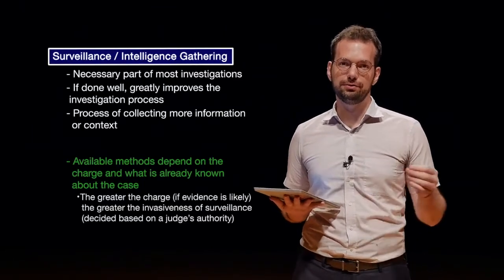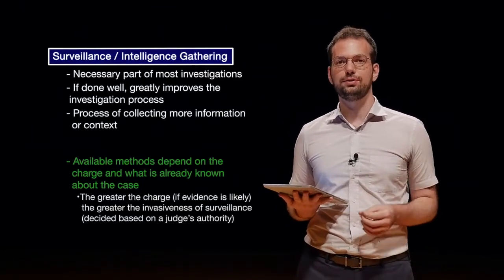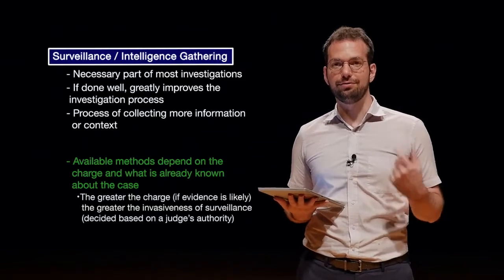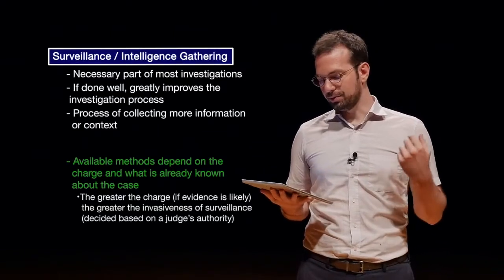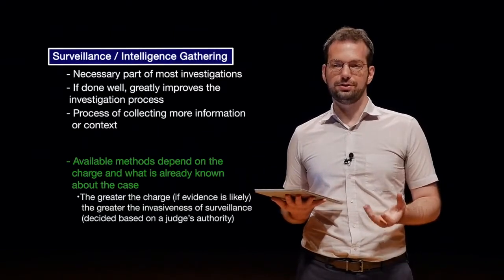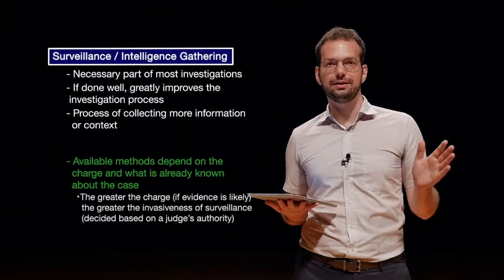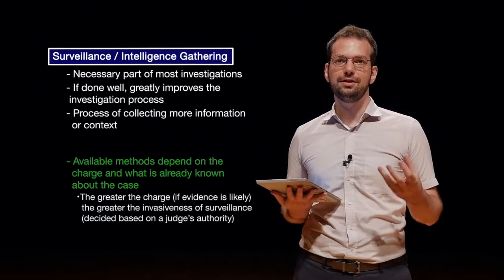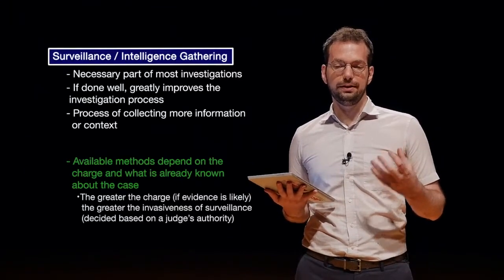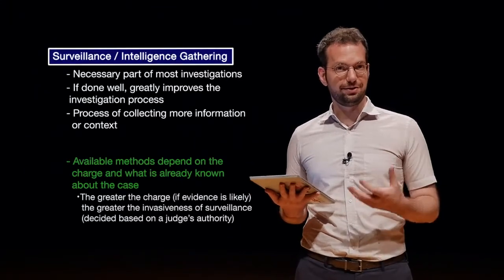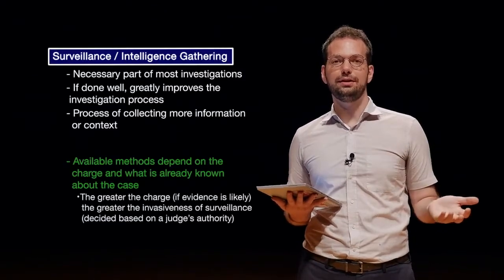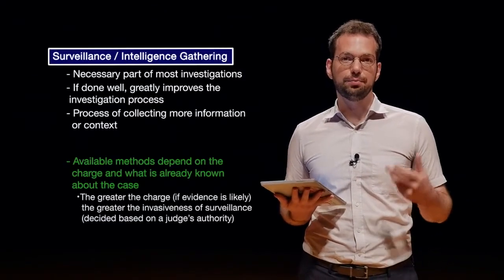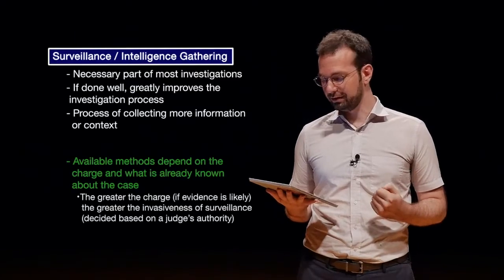They have to get permission, usually from a judge or prosecutor, to do any type of invasive surveillance. So if the charge is something like terrorism, and they can show some evidence that terrorism is actually the case, they're more likely to get permission to do some type of surveillance.